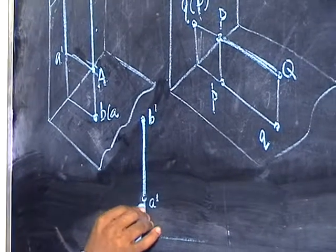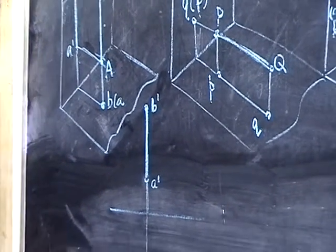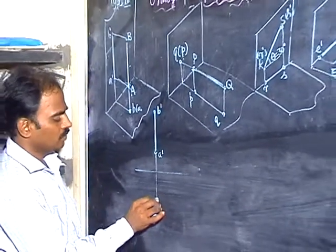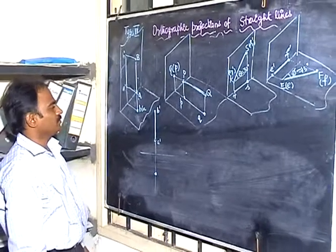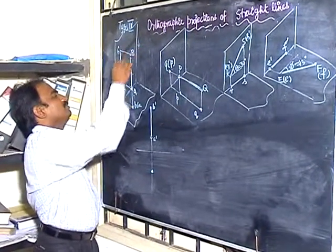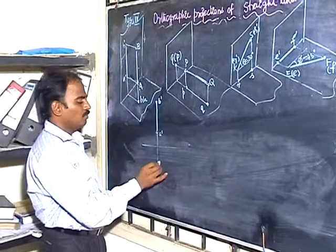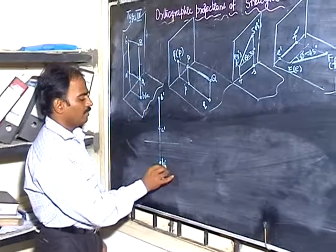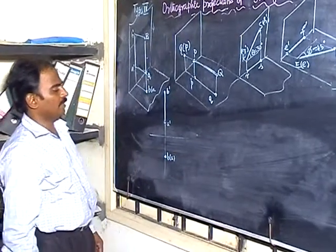Then you just project to A dash B dash. Find out this in front of distance. In front of is always below. So it is only a point. You see from the top only B is visible. A is not visible. So put B, then A within bracket. So this is how the projection look like.